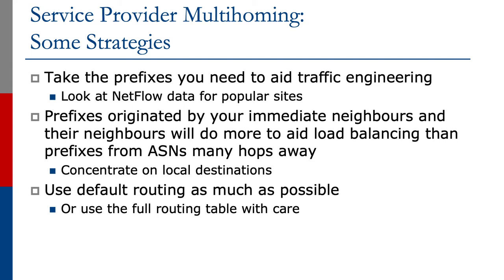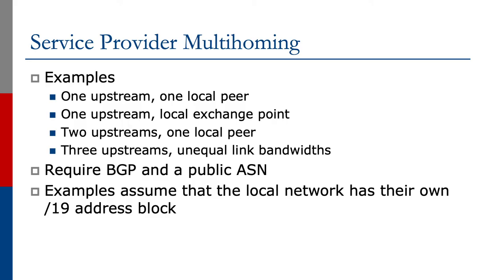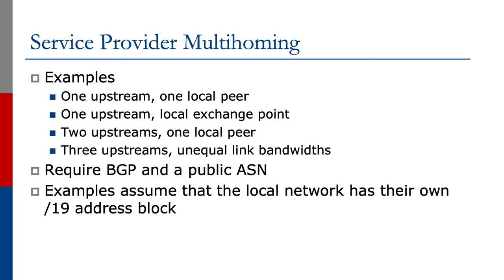If we do want to use the full routing table, we can — nothing wrong with that. But let's try to be careful about juggling the large number of V4 prefixes we see today. We're going to look at some examples in the following clips: one upstream and one local peer; an upstream connecting to a local exchange point and some detail around that; and finally, two upstreams and how we manage the outbound traffic engineering in that scenario. We need to use BGP and a public autonomous system number. In all the examples, we'll assume the local network has their own address block — in this case, a /19 of V4 address space.